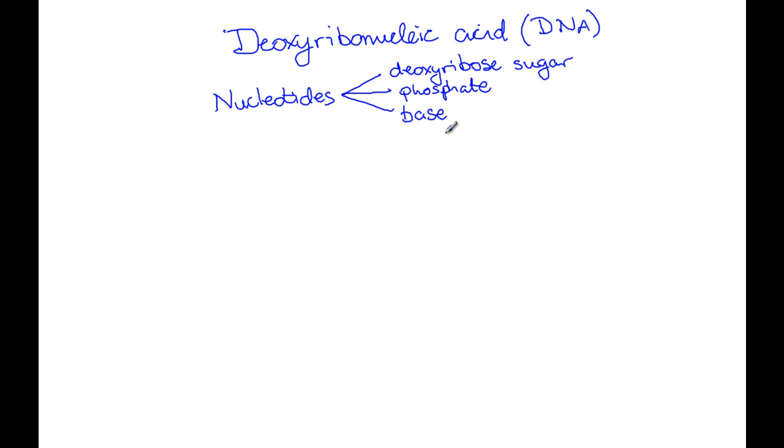Now bases, nucleotide bases, there are four different types. They come in the form of adenine, which is A. Guanine, which is G. Cytosine, which is C. And thymine, which is signified by T. So they're the four different bases of DNA.